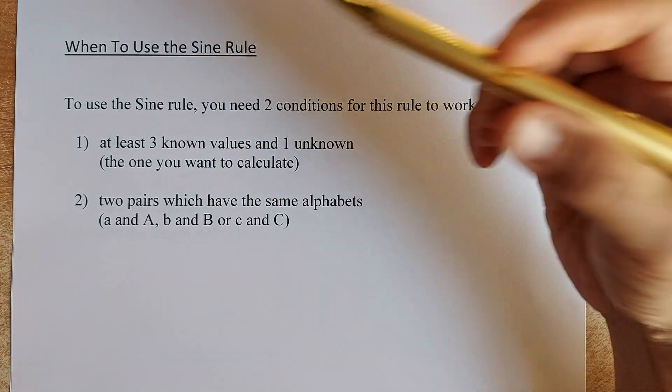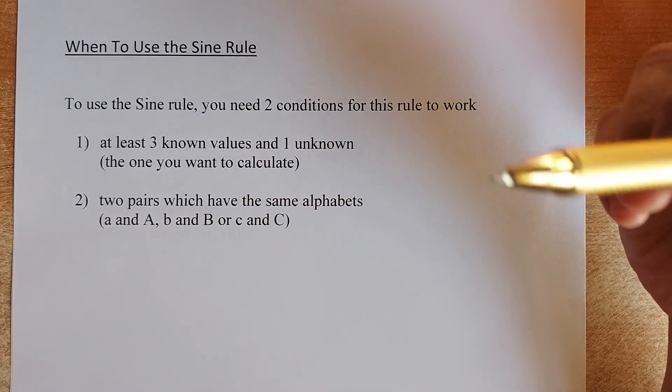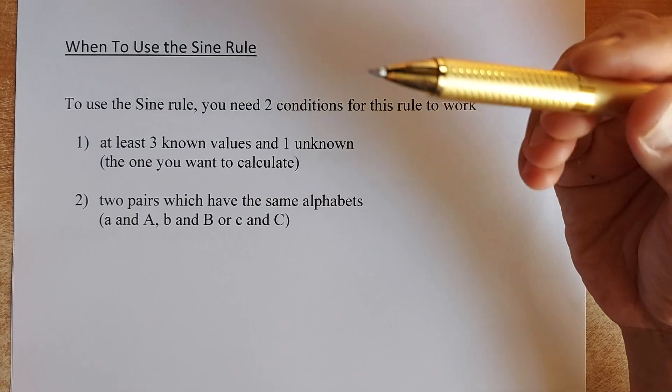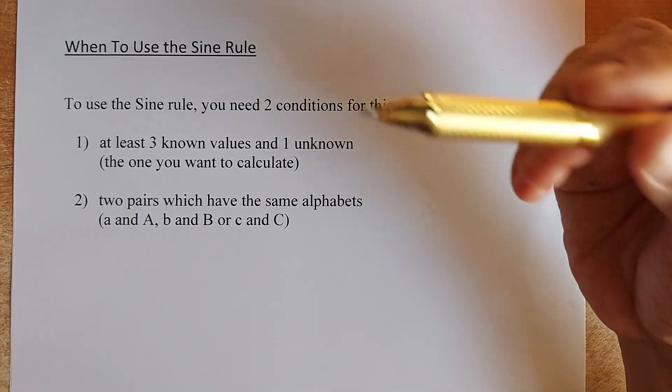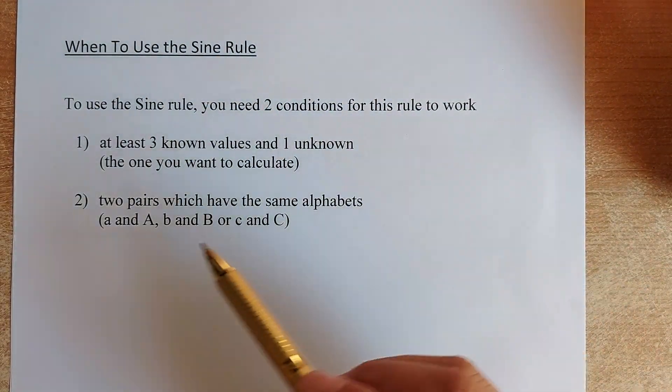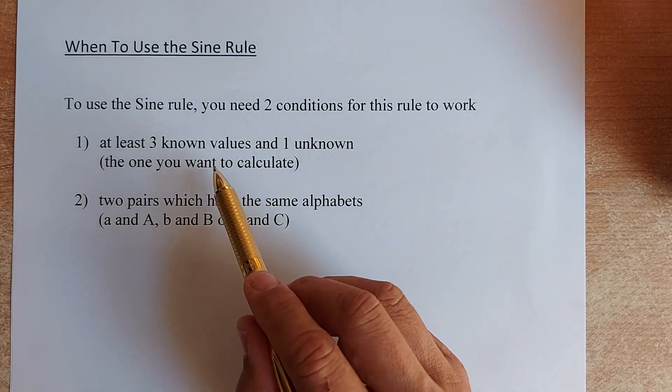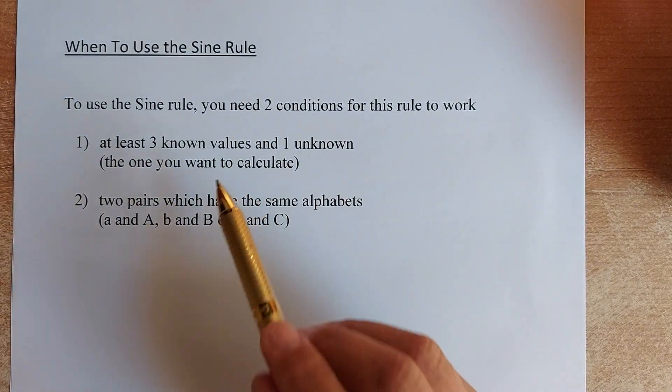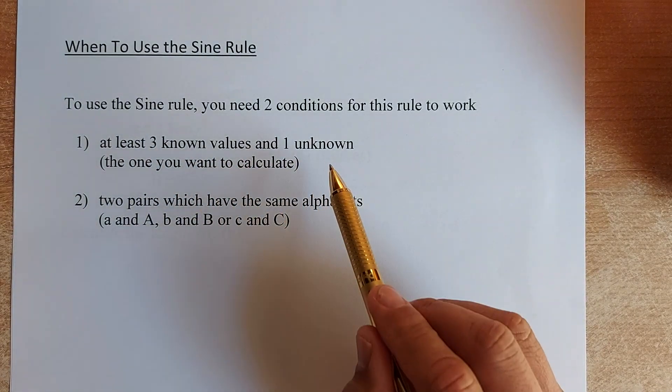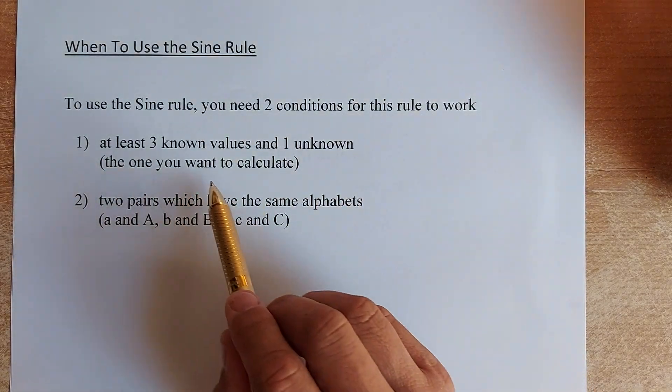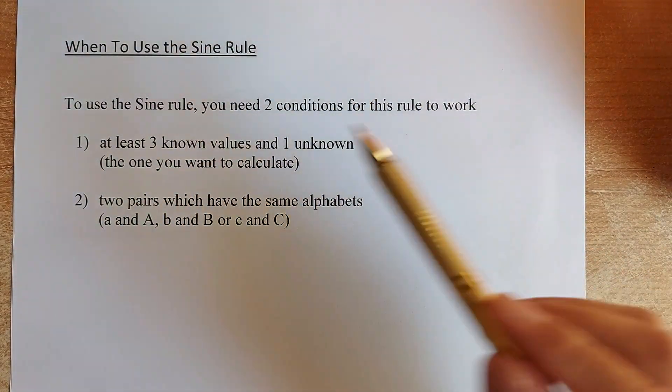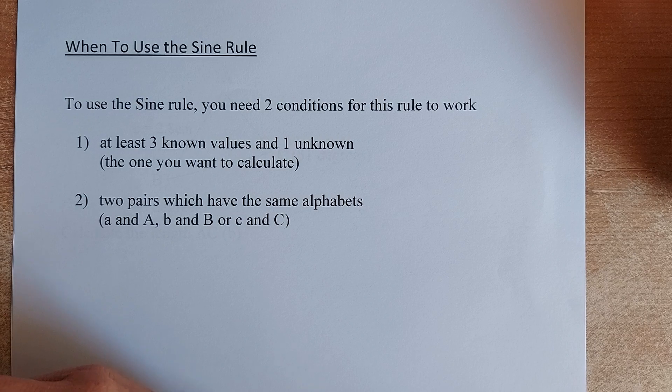We shall now look at how are we going to do the sine rule. To use the sine rule, you need two main conditions for this rule to work. Remember this, very important. The first rule is that three of the unknown values of the triangle have to be given, and you are finding the unknown.